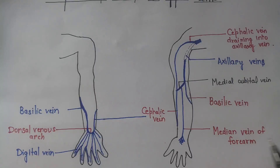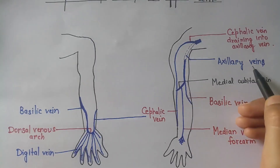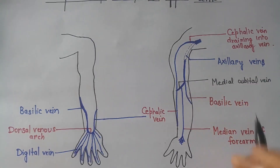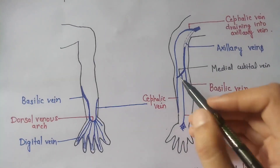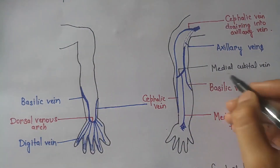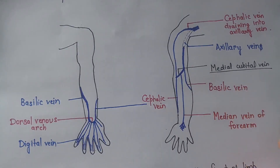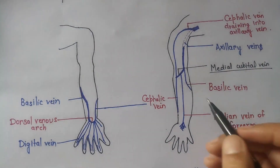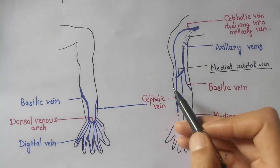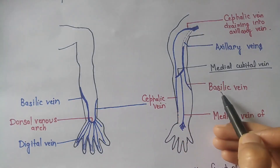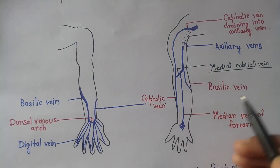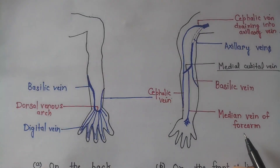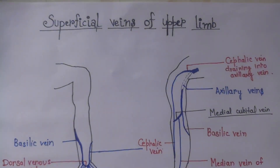There is also the median cubital vein, which is a large communicating vein that shunts blood from the cephalic vein to the basilic vein. These are the superficial veins of the upper limb.